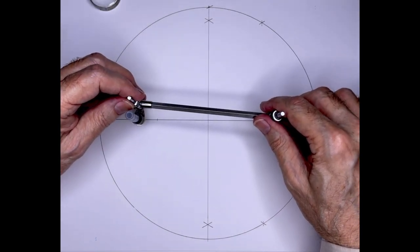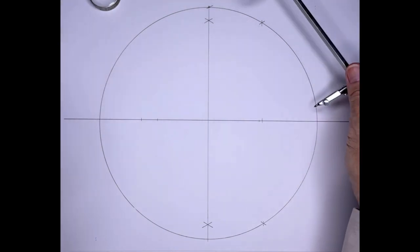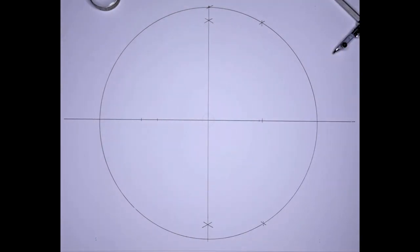I strike a little arc there to be sure that I was on, and then I move down and I mark that on the baseline of the circle, and I am done with the compass work.